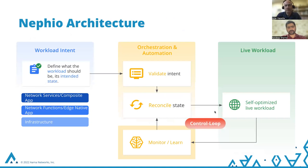The NEPheo architecture at a very high level is as follows. You first state your intent — everything is declarative and intent-driven. The intent explains to NEPheo what the infrastructure requirements are, what the network function or edge native application requirements are, and on top of that, the network service or composite application. Then, based on the intent, the orchestration happens: you validate the intent, deploy it, and that goes into a control loop where you're constantly monitoring the application and reconciling the state. This ensures there is no configuration drift, and it's also useful for day one and day two configuration, where you may change your intent and it's automatically reflected on the workload.